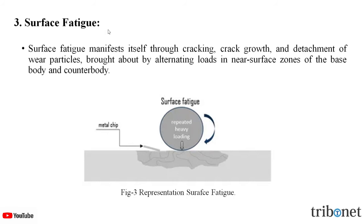The first mechanism is surface fatigue. Surface fatigue manifests itself through cracking, crack growth, and detachment of wear particles, brought about by alternating loads in near-surface zones of the base body and the counter body. In this figure, we can see that a heavy load roller is in contact with the metal surface, and due to the increase in load, cracks are generated and microchips form on the counter part.